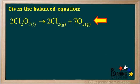Given the balanced equation: 2Cl2O7 liquid gives 2Cl2 gas plus 7O2 gas.